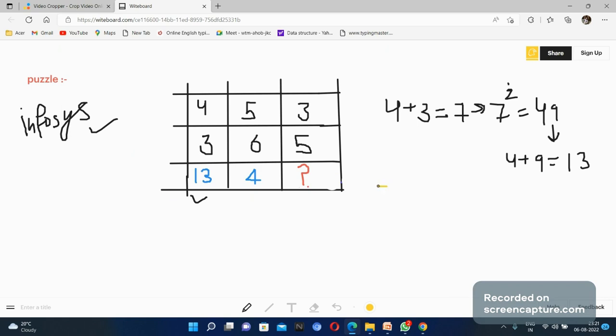In the second line, when we add 5 plus 6, we get 11. When we square 11, we get 121. When we add all these digits, 1 plus 2 plus 1 equals 4. In this way, 4 will come.